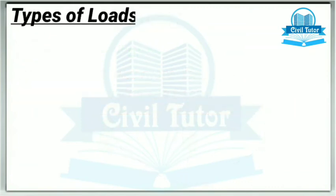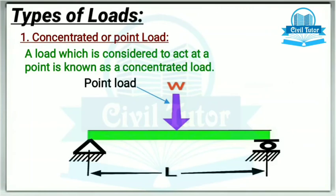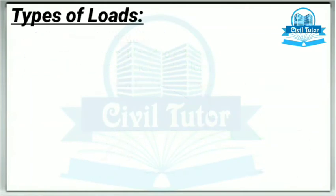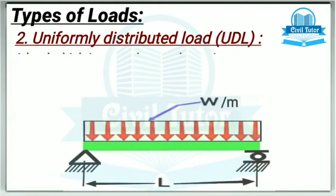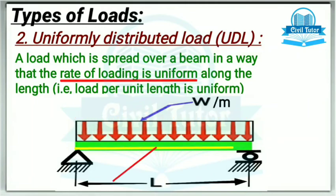Now the various types of loads are: The first one is concentrated load or point load. It is defined as a load which is considered to act at a point, known as concentrated load. The second one is uniformly distributed load, or simply UDL. It is defined as a load which is spread over a beam in a way that the rate of loading is uniform along the length of the beam — that is, load per unit length is uniform.